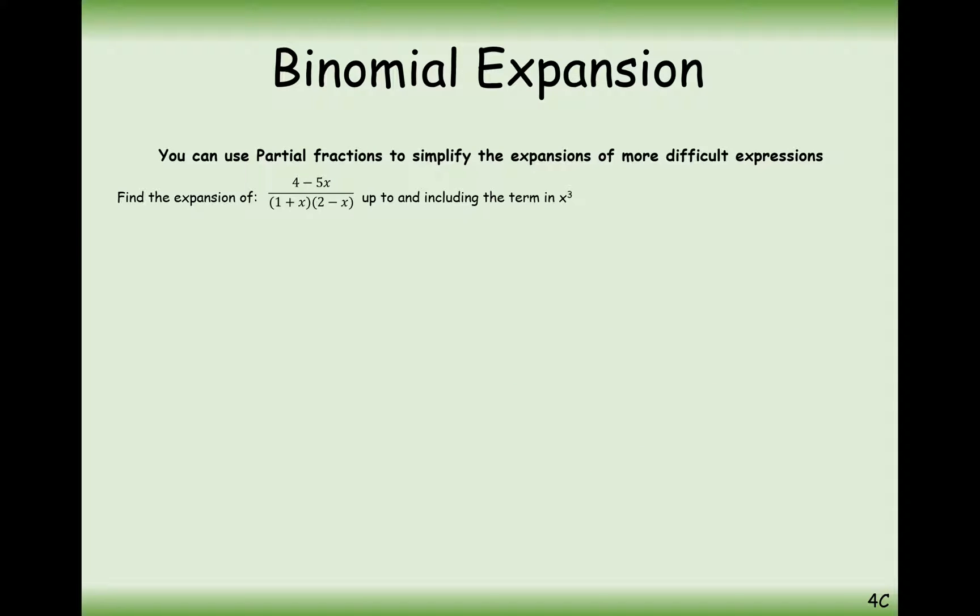Basically it's a two-step process of topics that we've seen before. We're going to split a fraction into partial fractions, and then with those two fractions, or three fractions potentially, we're going to write out the binomial expansion of those, and then combine them together to form one binomial expansion of the whole thing.